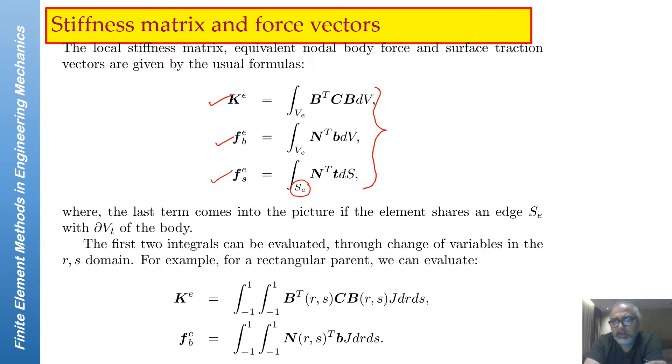We also discussed that the whole idea of doing the isoparametric formulation is to effect change in variables here. Each of these B's and N's are functions of X and Y. We can also treat them as functions of R and S, where each X and Y can be mapped to an R and S in the isoparametric formulation.